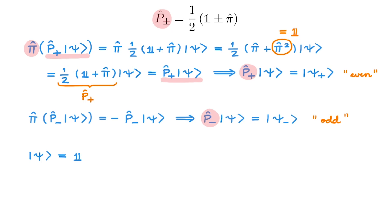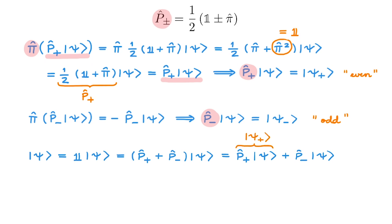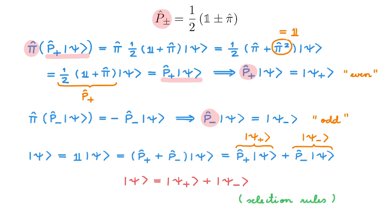The final step is to show we can write an arbitrary state psi as the sum of psi plus and psi minus. Inserting the identity, and expanding it as the sum of the two projection operators, multiplying through gives psi plus plus psi minus. This result is very useful because even and odd states are related to something called selection rules — detailed in the corresponding linked video. In short, the matrix elements of certain operators calculated between even and odd states vanish, which is an extremely helpful result that simplifies the mathematics in many problems, for example when studying optical absorption.